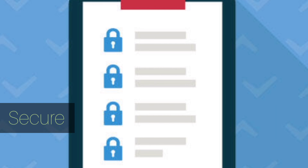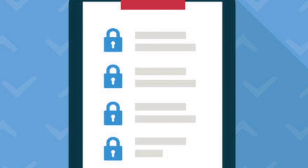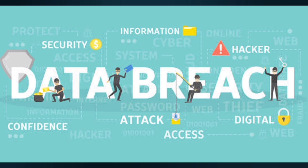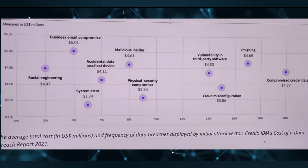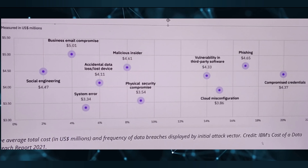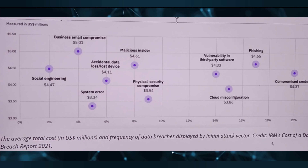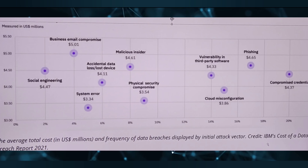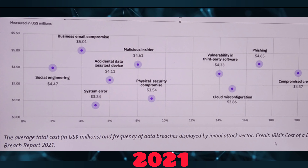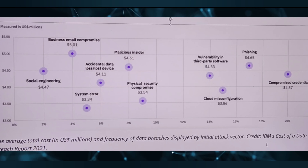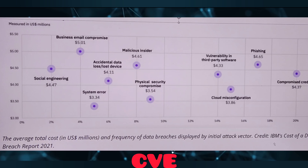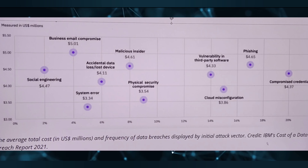The most effective way to prevent software vulnerabilities is to use secure coding standards and enforce all security standards. Below is the IBM Cost of Data Breach Report of 2021 showing various network attacks and the compromise costs associated with each. 2021 was a record year for vulnerabilities, with the number of new Common Vulnerabilities and Exposures (CVEs) exceeding 20,000 for the first time ever.